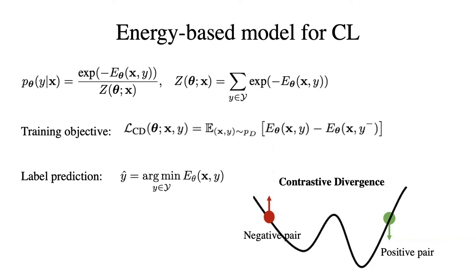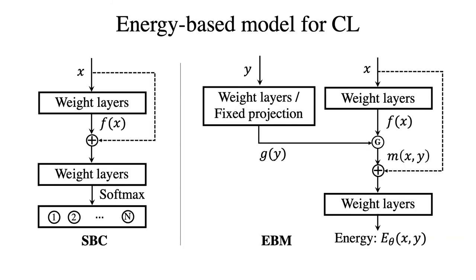During testing, we feed each class label to the energy function and compute their energy with the image. The prediction is the class label that has the lowest energy. Here we show the architecture of the softmax-based classifier and our energy-based model. Our energy-based model takes both the image and the label as input and outputs their energy. The architecture is very flexible and allows us to combine information from the image and class labels in many different ways.